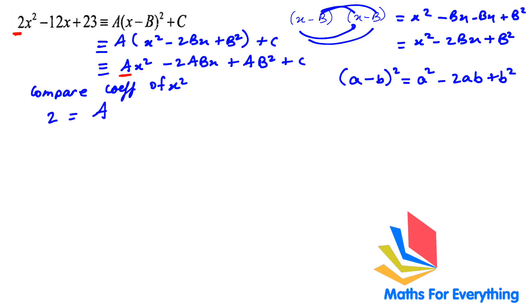The next step will compare coefficient of x. On the left hand side, we have -12 is before x. And on the right hand side, -2ab. So -12 is equal to -2ab.